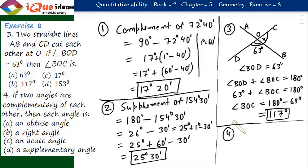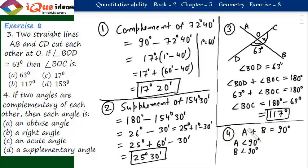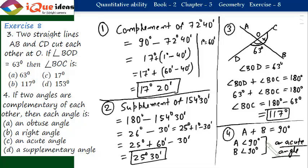Question number 4: if two angles are complementary, then A plus B equals 90 degrees. That means each angle must be less than 90 degrees — A less than 90 degrees and B less than 90 degrees. Angles less than 90 degrees are called acute angles. So, each angle is an acute angle, and whichever option has an acute angle, that will be the answer.